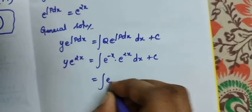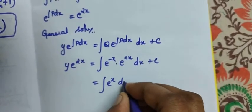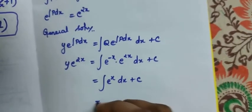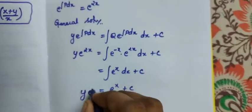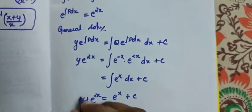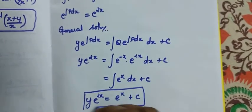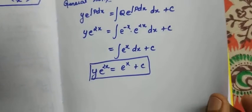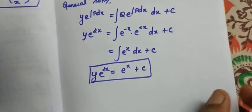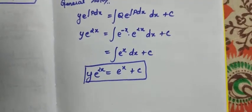So it is equal to ∫e^x dx + c, which is equal to e^x + c. So y·e^(2x) = e^x + c. That is our answer: y·e^(2x) = e^x + c.